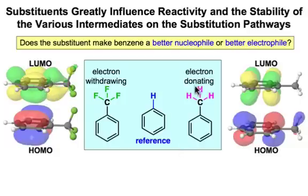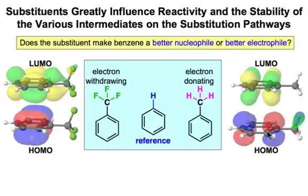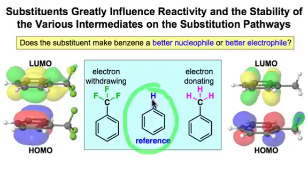Electron donating substituents, such as this methyl group on benzene, have their greatest influence on the highest occupied molecular orbital. In the case of this methyl substituent, it's electrons occupying the σ bond of the carbon–hydrogen bond that donate in a σ-to-π* π-type interaction and increase the electron density in the π system of the benzene ring to make it a better nucleophile. When we talk about better nucleophile or better electrophile, in all cases we're comparing it to the reference case of no substituent — just a hydrogen atom.